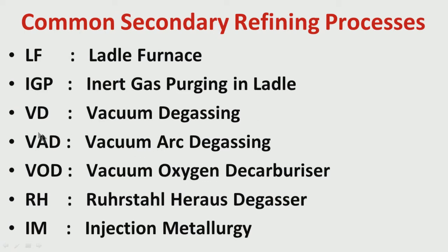I talked about VAD — vacuum arc degassing — how the arcing helps in increasing and controlling the temperature, and how it is helpful. I have talked about the RH process — the Ruhrstahl-Heraeus degasser — how it helps in controlling the gaseous elements like nitrogen and hydrogen. I have talked about injection metallurgy — basically how CaSi injection helps in modifying the inclusions and controlling the melting point of the inclusions and related issues.